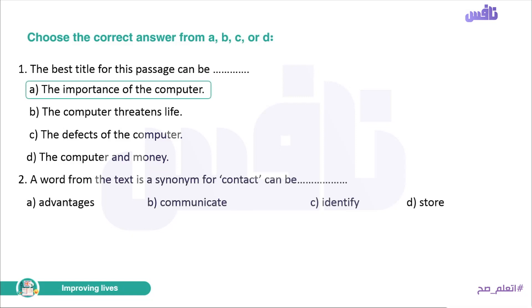Number two. A word from the text is a synonym for 'contact'. Options: advantages, communicate, identify, or store. The synonym for 'contact' is 'communicate.'